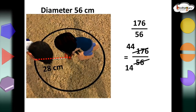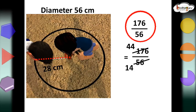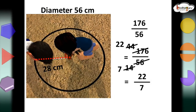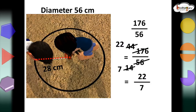In the second case, the circumference was about 176 cm, and the diameter was 56 cm. Now, let's find the ratio of 176 and 56. 176 and 56 are divisible by 4. So, we get 44 by 14. Now, we can reduce this ratio further, as both 44 and 14 are divisible by 2. So, we get 22 by 7.